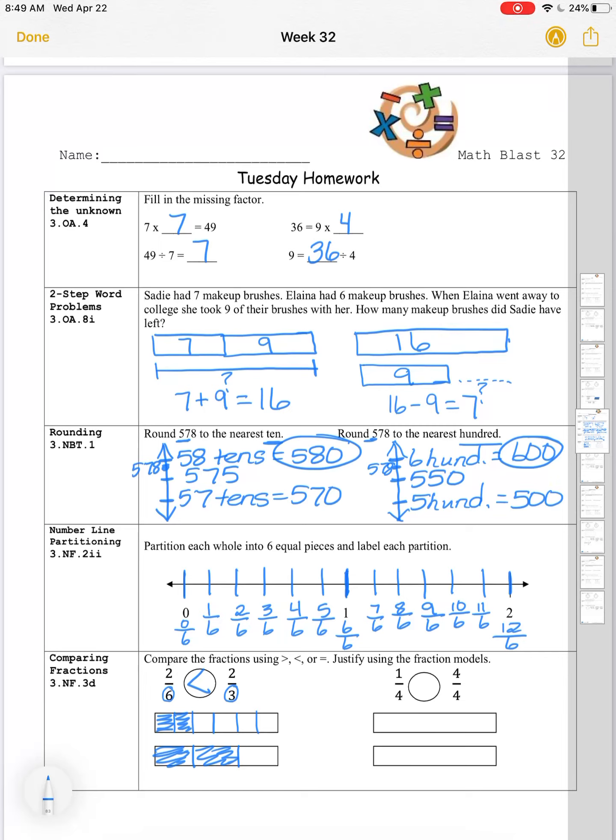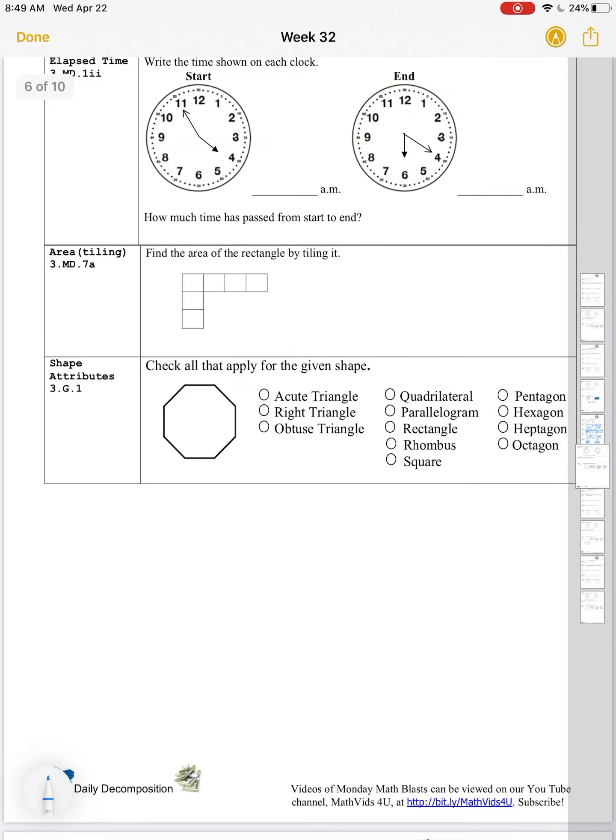Our next fraction set here is one fourth versus four fourths. Here our fractions share a common denominator, so the number of equal parts in the whole, the units that we're dealing with, are the same. I'm going to break each model into fourths, four equal parts. In the first model, I'm going to shade one of those parts. In the second model, I'm going to shade four of those parts. Now we can see that one fourth is less than four fourths.